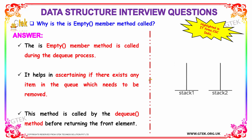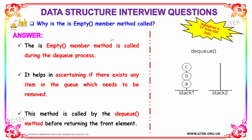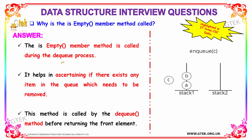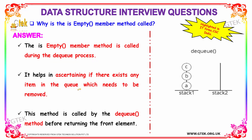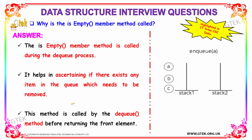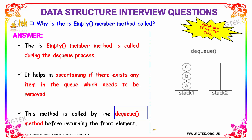Our next question is: why is the isEmpty member method called? The isEmpty member method is called during the dequeue process. It helps in ascertaining if there exists any item in the queue which needs to be removed. This method is called by the dequeue method before returning the front element that is stored.